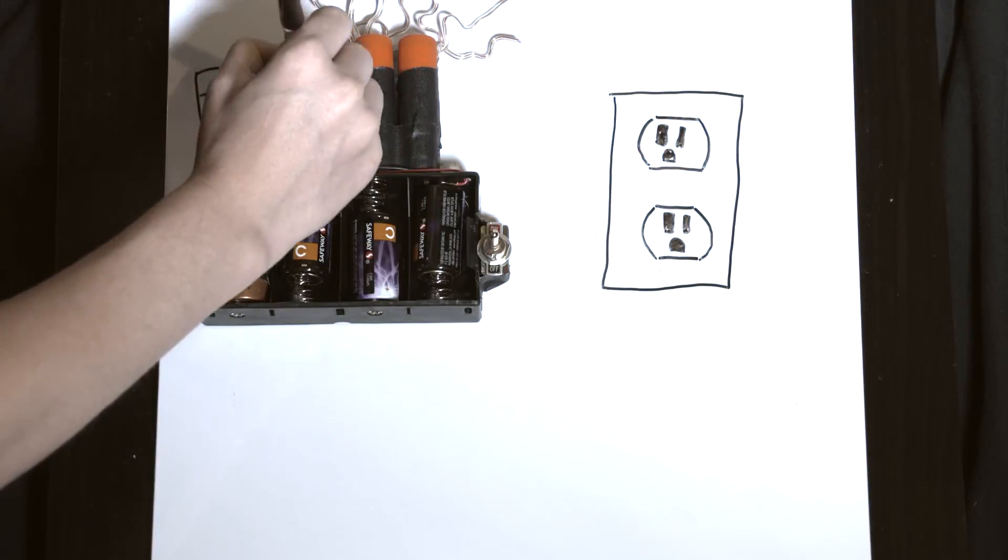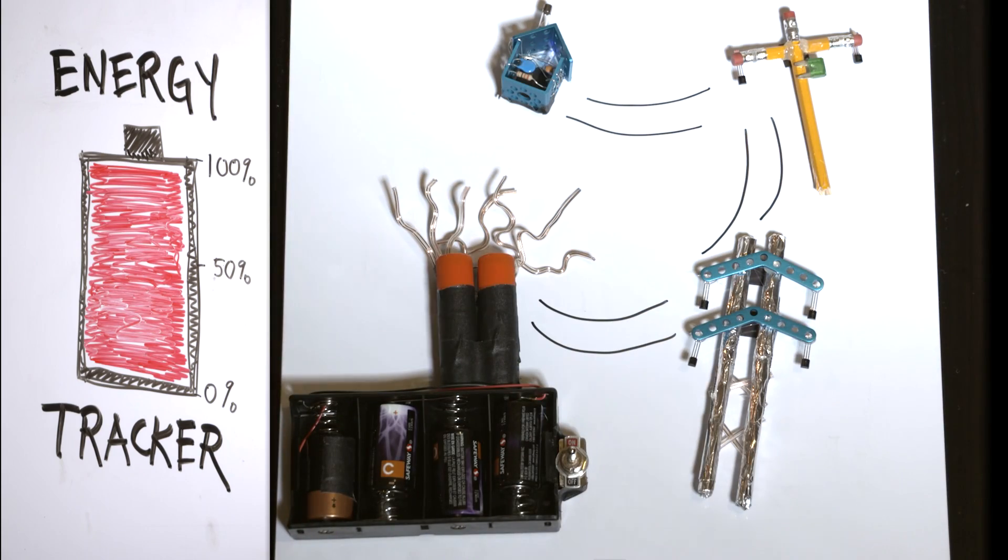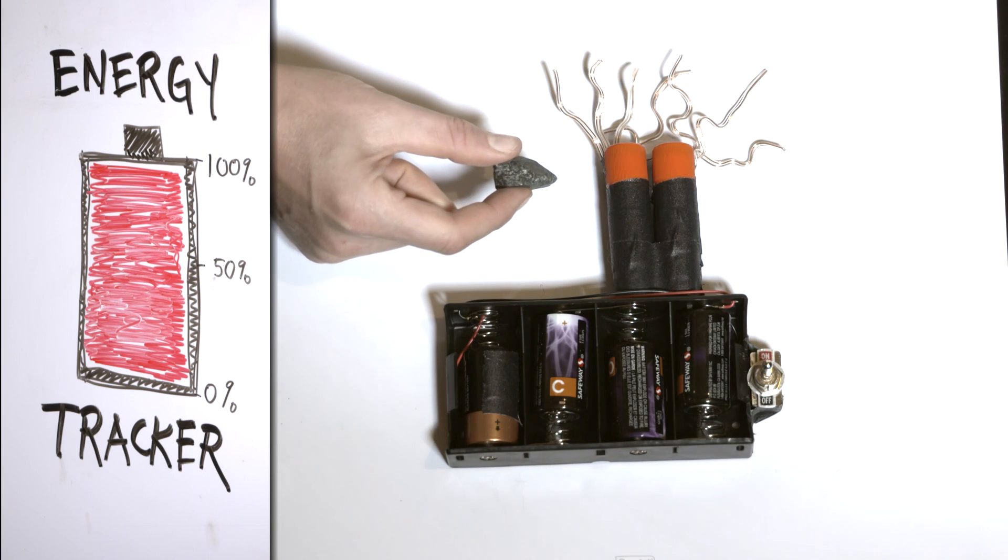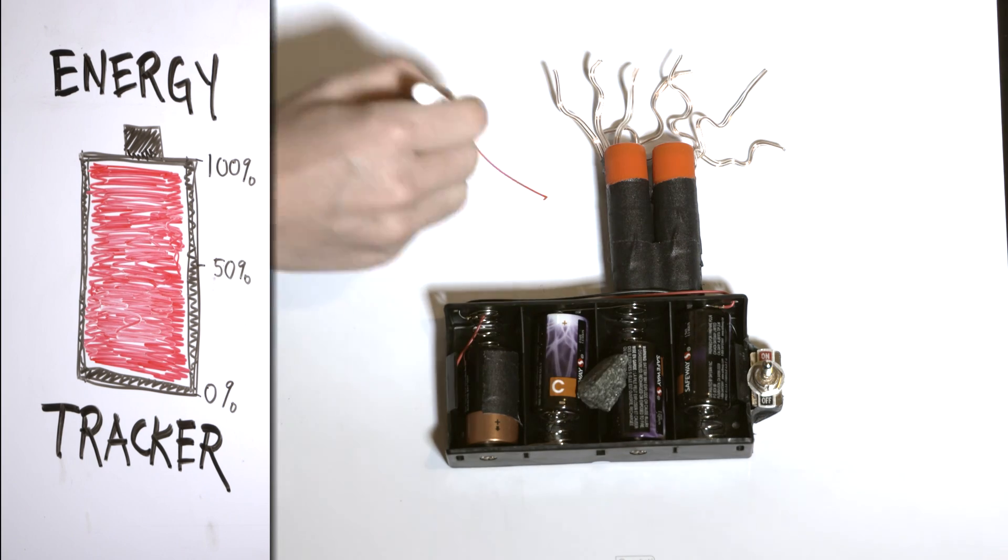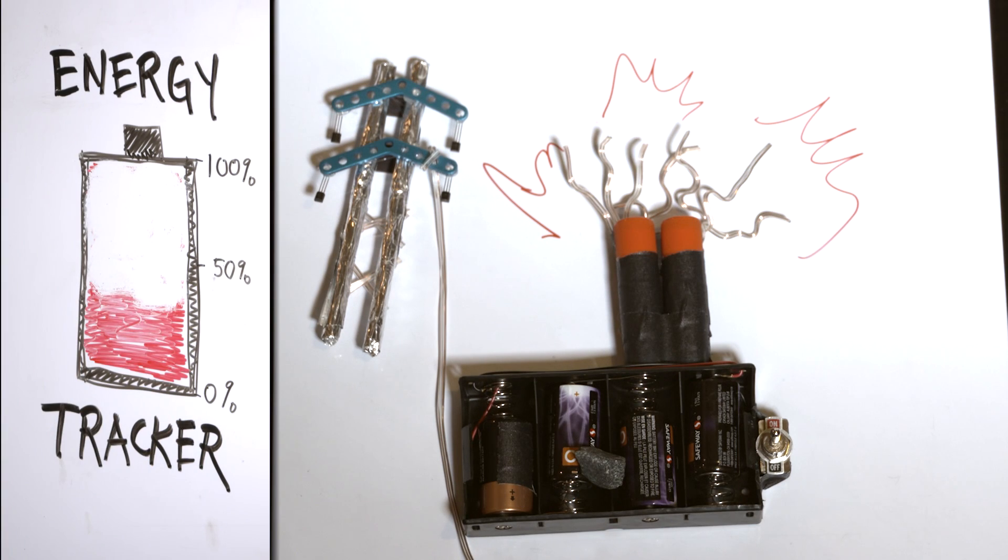As electricity goes from a power plant to the plug in your home, how much is lost? Let's break it out, step by step. Consider this slump of coal. Stick it in a power plant, and only a third of its energy makes it onto the grid as electricity. That's physics for you.